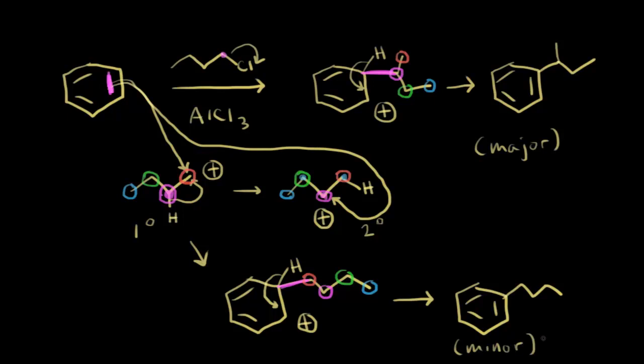This shows one of the limitations of Friedel-Crafts alkylation — you can't always control which alkyl group ends up on your ring because carbocation rearrangement is possible. If your goal was to make butylbenzene, you wouldn't be able to make it in extremely high yield using Friedel-Crafts alkylation. We'll see a better way to do that in the next video on Friedel-Crafts acylation.